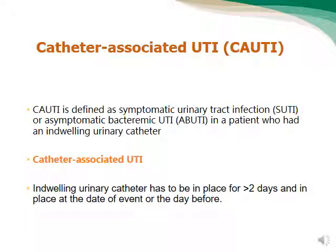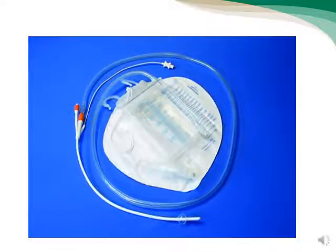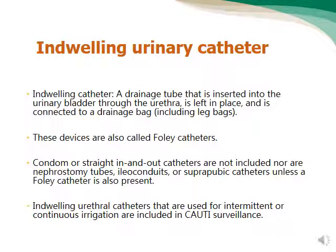Either SUTI or ABUTI, plus the presence of an indwelling urinary catheter, is called CAUTI. The indwelling urinary catheter is a catheter that resides inside the urinary bladder, drains the urinary bladder, is inserted through the urethra, and is connected to a collection bag.